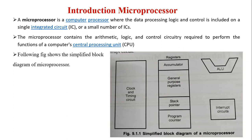This figure shows the simplified block diagram of the microprocessor. As shown in this figure, it consists of an arithmetic and logical unit, general purpose registers, then a stack pointer, program counter, accumulator, and clock timing circuits and interrupt circuits.